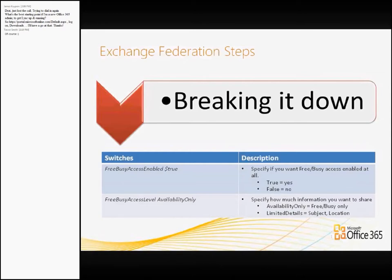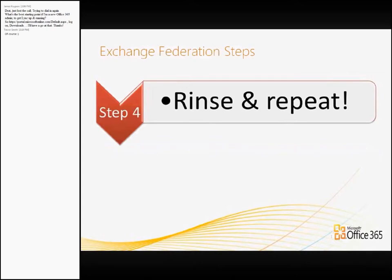That establishes the relationship. The next step is to rinse and repeat — do it on both sides for it to actually work, otherwise you'll simply have a one-way relationship. If you type in those commands and set up the federation, that will allow the remote party to see your calendar, but it won't allow you to see theirs. So you do need to do it on both sides. Unless there's any questions, I'm just going to jump into a demonstration.